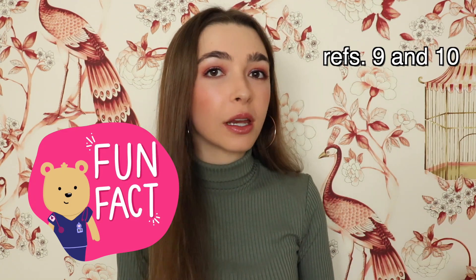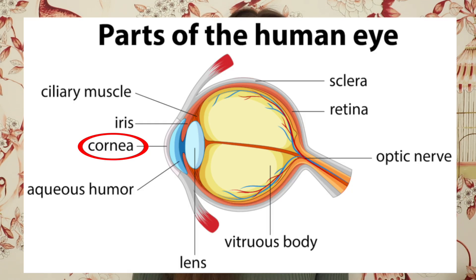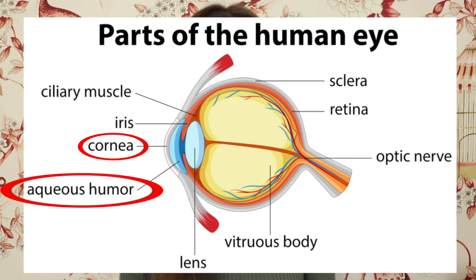Fun fact: blood flows to every living tissue in your body except for your cornea, which gets its oxygen and nutrients from the tear fluid on the outside of the eye, the aqueous humor on the inside of the eye, and nerve fibers. The cornea does not have blood vessels because it needs to be transparent so that you can see. Since blood flows to every living tissue in your body except for your cornea, this is why Bartonella can cause almost any symptom you can think of, depending on the tissue that is being affected.